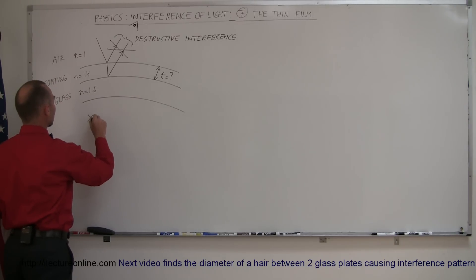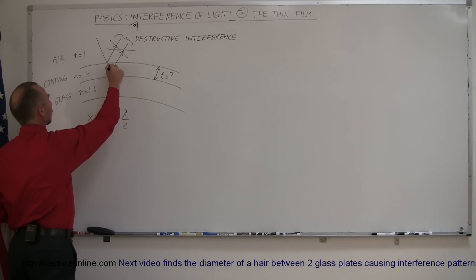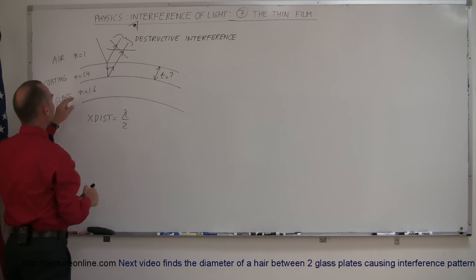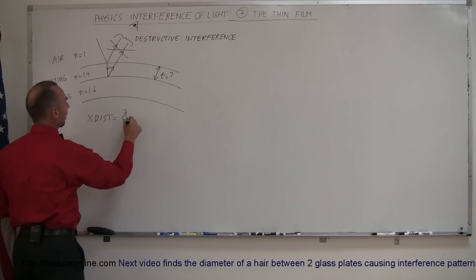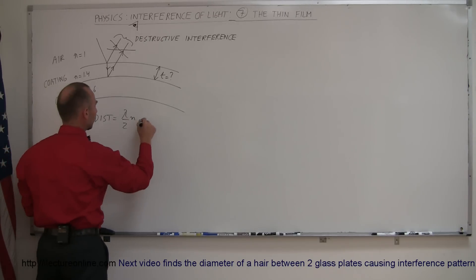So that means that extra distance traveled is equal to lambda over 2, and since the second wave is traveling through the coating where the index of refraction is 1.4, we have to take into account the index of refraction, so this is equal to lambda over 2n.